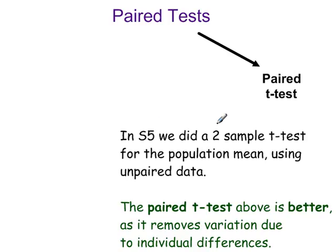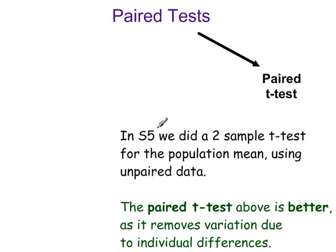In unit S5, we did a two-sample T-test for the population mean using unpaired data. The paired T-test is better as it removes variation due to individual differences. However, if paired samples are not available, then the two-sample T-test done in unit S5 is an alternative.